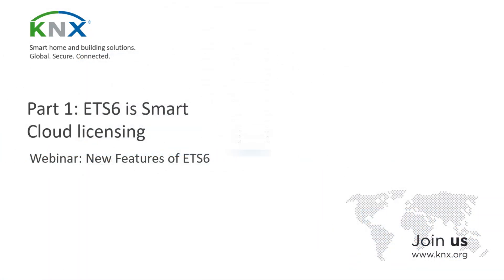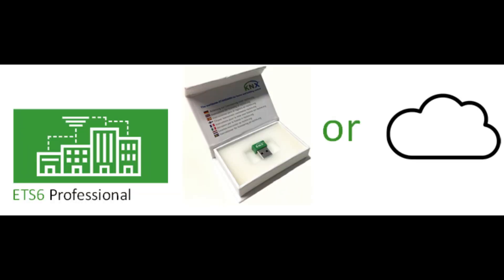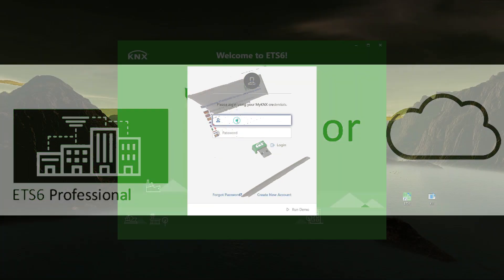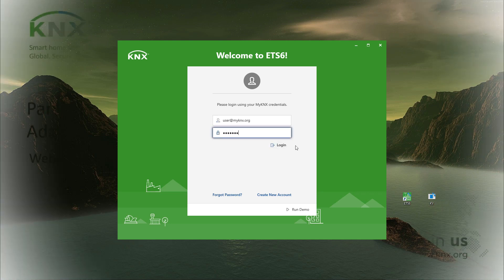ETS 6 comes with a new licensing model which supports cloud licensing in addition to the dongle-based licensing, with the possibility to work offline for some time in case there is no internet connection available. To do so, ETS 6 connects to the user's MyKNX account to fetch any available and suitable license for the software.